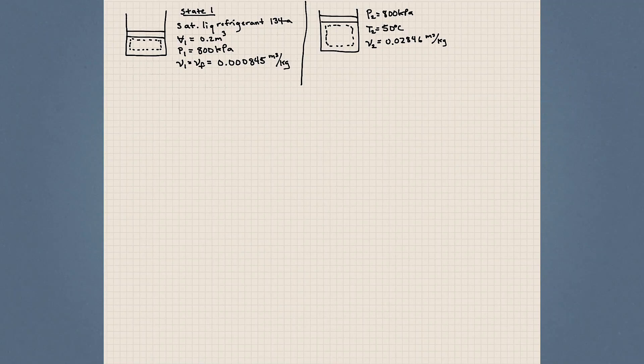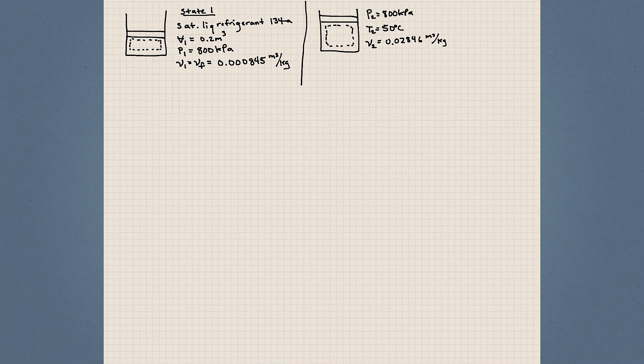Let's finish working some example problems from Chapter 3. What we are focusing on here is applying the first law of thermodynamics. We haven't talked yet about properties of substances, so don't be too concerned about where these properties come from yet. In the following chapter, I'll tell you where they come from and what they mean. For now, I'll give you a brief description of these properties and how I came about getting them.